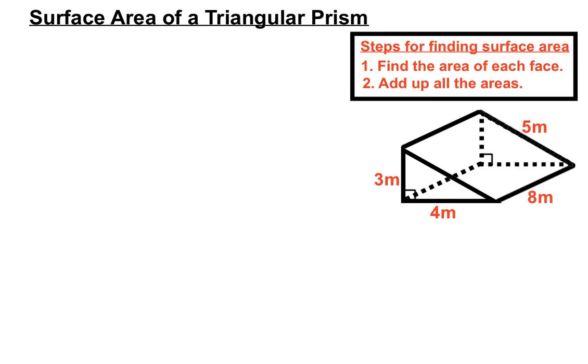Let's have a look at a triangular prism. Here we have a base of 4 meters, a height of 3 meters, a slopey length down the back there of 5 meters, and of course that's on the front edge as well. The prism goes back 8 meters altogether.